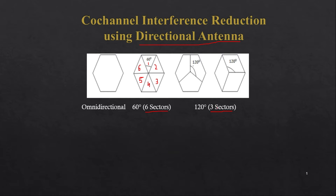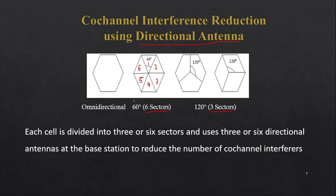Similarly, we can go for 120-degree or three sectors. You can adjust these angles or directions as per your requirement. In a practical scenario, it is not always exactly 120 degrees — it will depend upon the amount of congestion. Each cell is divided into three or six sectors and uses three or six directional antennas at the base station to reduce the number of co-channel interferers.